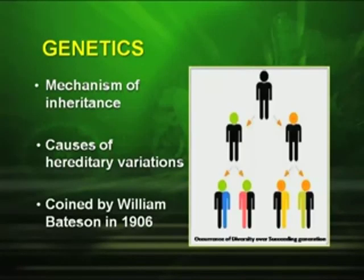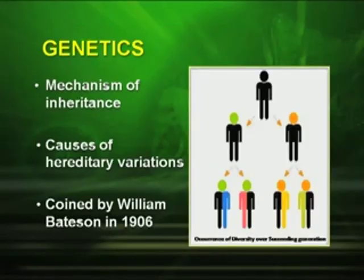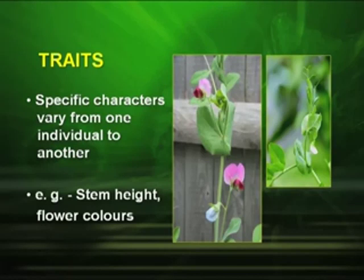What is genetics? It is the mechanism of inheritance and the causes of hereditary variations. When we study genetics, we study it in terms of hereditary variations. The term was coined by William Bateson in 1906. Now, we often talk about traits. What are traits? These are specific characters that vary from one individual to another.